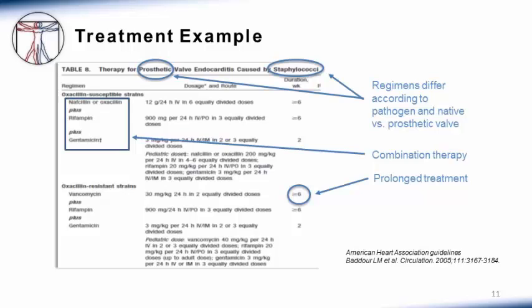As an example, here are the guidelines for the treatment of staph aureus prosthetic valve endocarditis. It is important to note that regimens differ for native versus prosthetic valve endocarditis. For prosthetic valve endocarditis, combination therapy is recommended, which involves a beta-lactam such as nafcillin in combination with rifampin and gentamicin. Prolonged treatment of at least six weeks is recommended. The specific regimens will differ according to microbiologic etiology, antibiotic susceptibilities, and whether the patient has native versus prosthetic valve endocarditis.